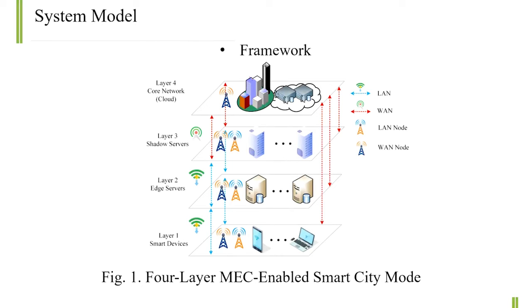To investigate the computing offloading problem effectively, we establish a 4-layer edge-enabled smart city model, which is depicted in Figure 1. This model is composed of 4 layers: smart devices, edge servers, shadow servers, and the core network. Low-layer terminals can request upper-layer services through corresponding wireless access nodes. The total energy consumption consists of three parts: namely transmission energy, queuing energy, and computation energy.